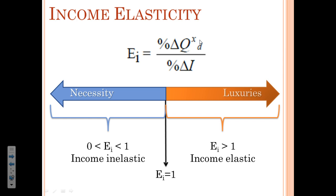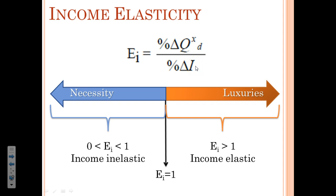A luxury good is one in which we're income elastic, meaning my income goes up and the quantity demanded of that good goes up by more than the increase in my income. That indicates I'm not buying a whole lot of that good right now because maybe I don't have the money for it, but as my income rises and I'm able to afford it, I will want significantly more of it relative to the change in my income. So when income elasticity is between zero and one, it's a necessity; when it's greater than one, demand is changing by more than income — it's a luxury.